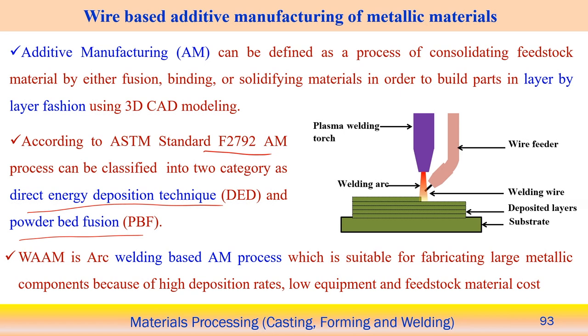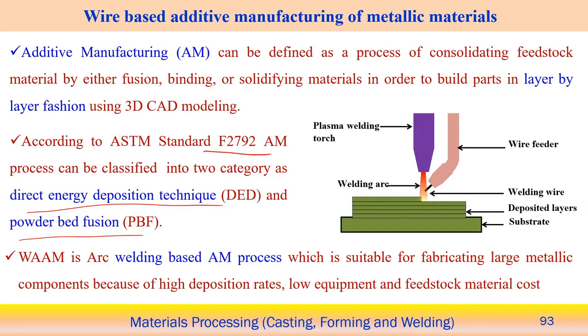Directed energy deposition can use powder or wire as raw material. In this module, we focus on directed energy deposition using wire as feedstock — known as the wire additive manufacturing process. For example, using a plasma welding torch as the heat source, with an external wire feeder supplying wire that is melted by the arc energy.